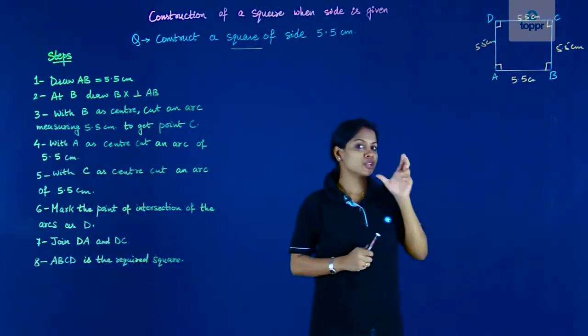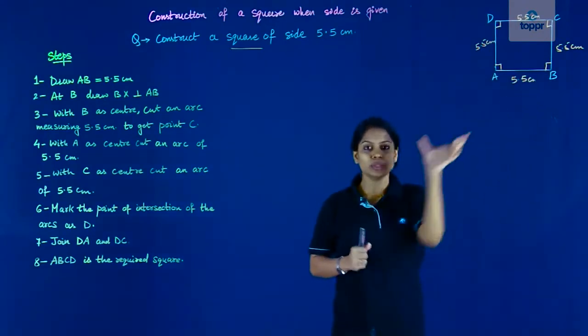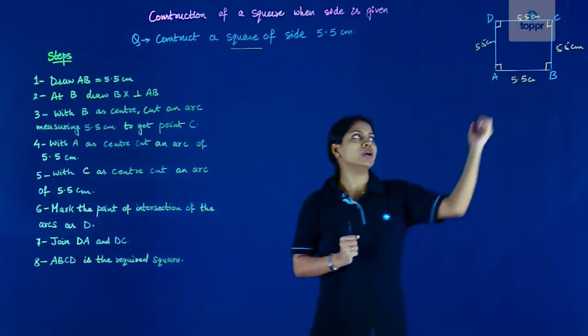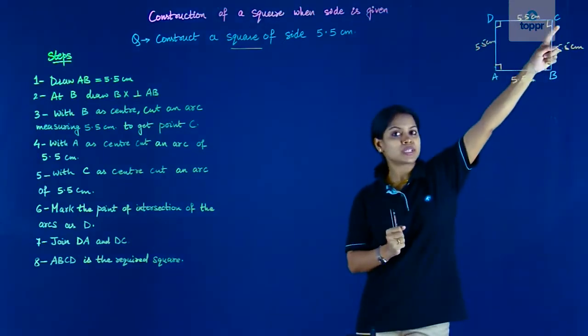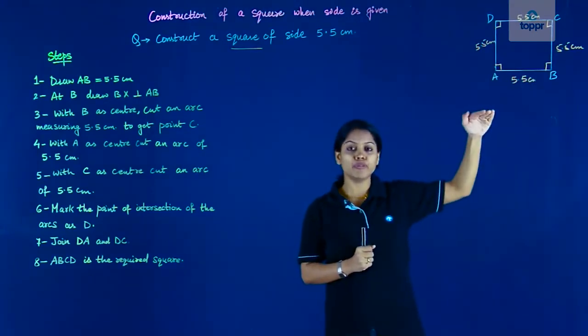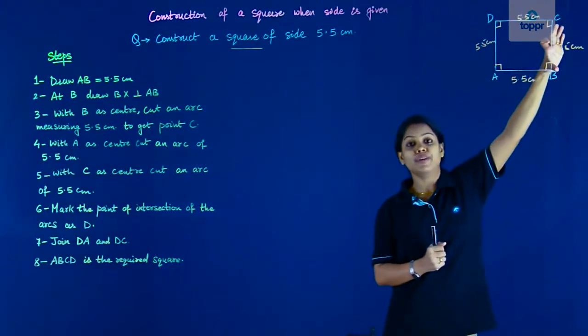So we'll first construct the base, that is AB. We'll start with AB. We'll take AB as 5.5 centimeters and then to get to the point C, we can construct a perpendicular ray at B and then cut it off with an arc of 5.5 centimeters.